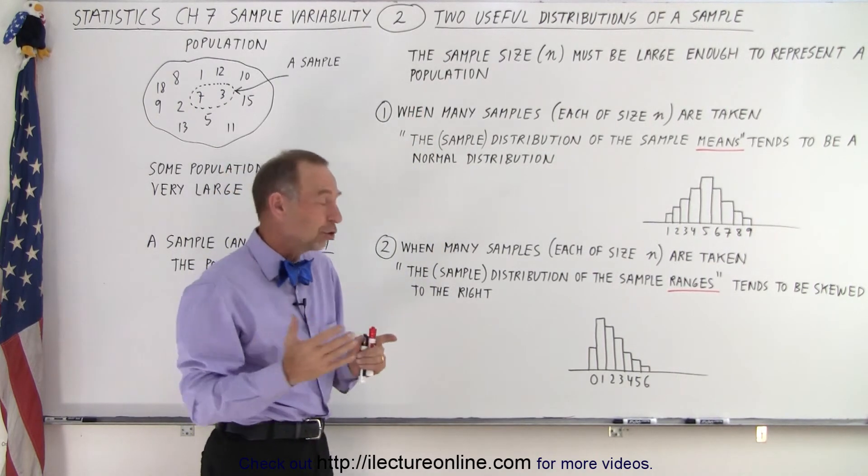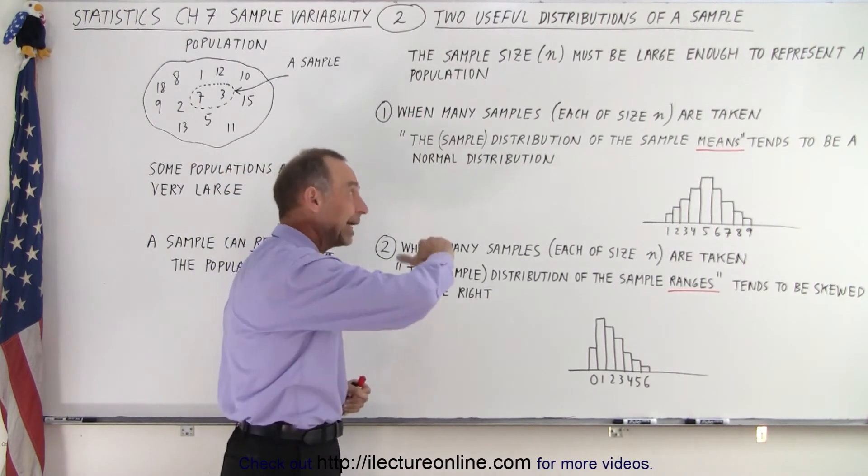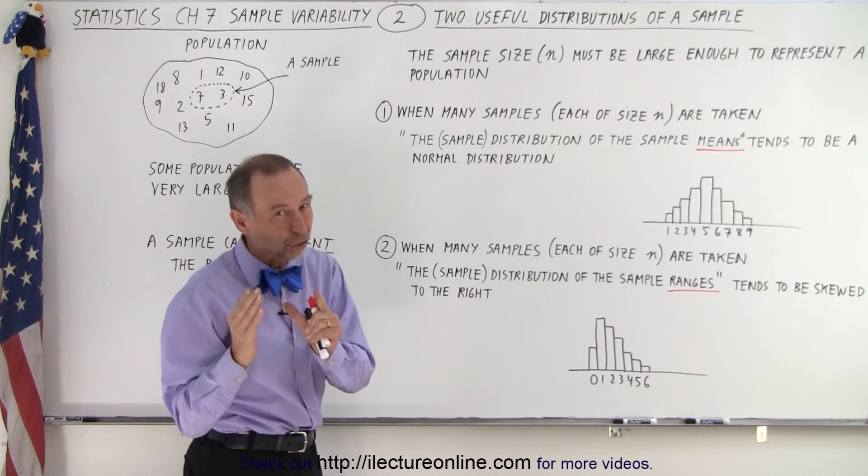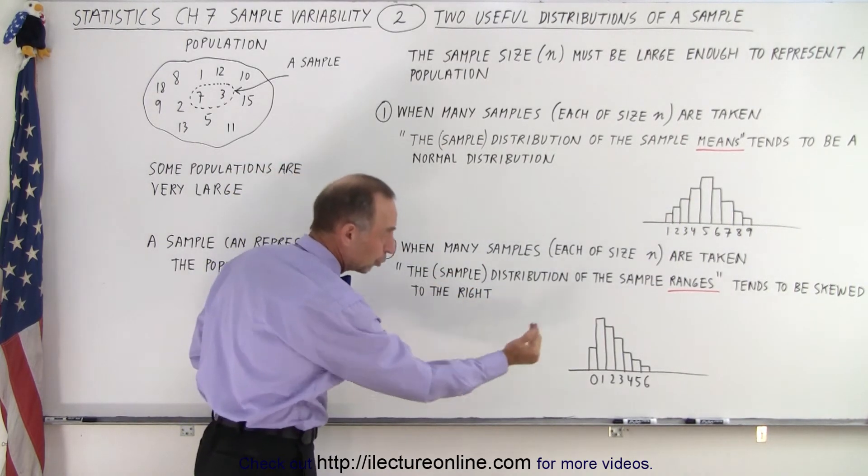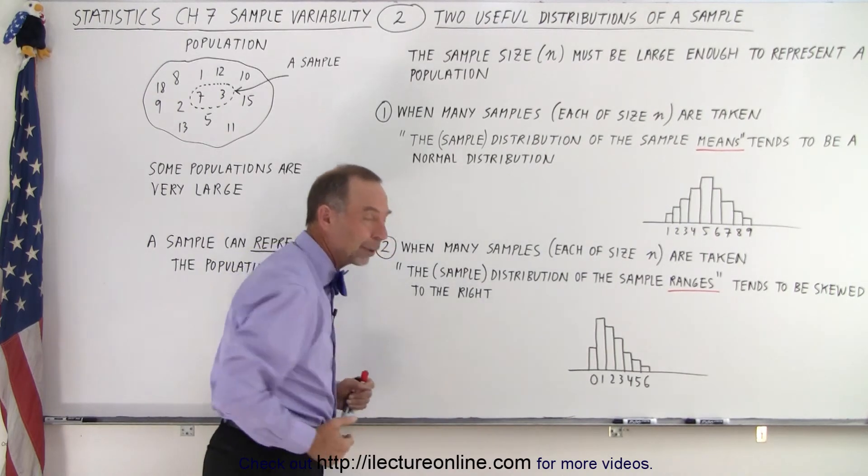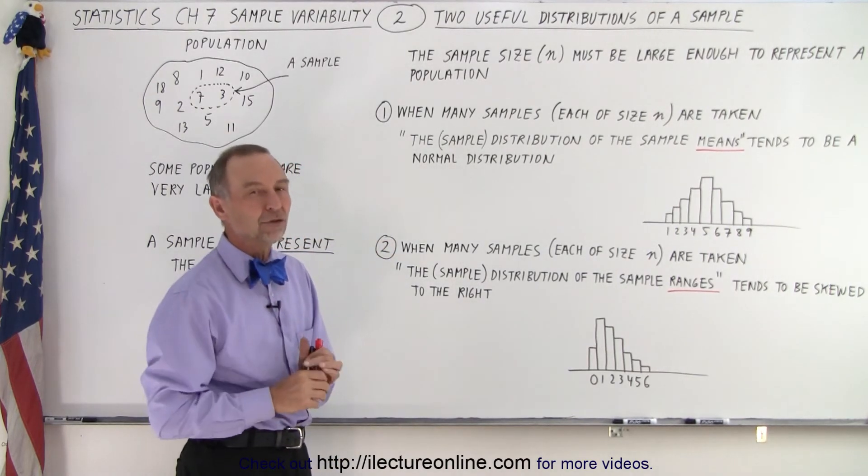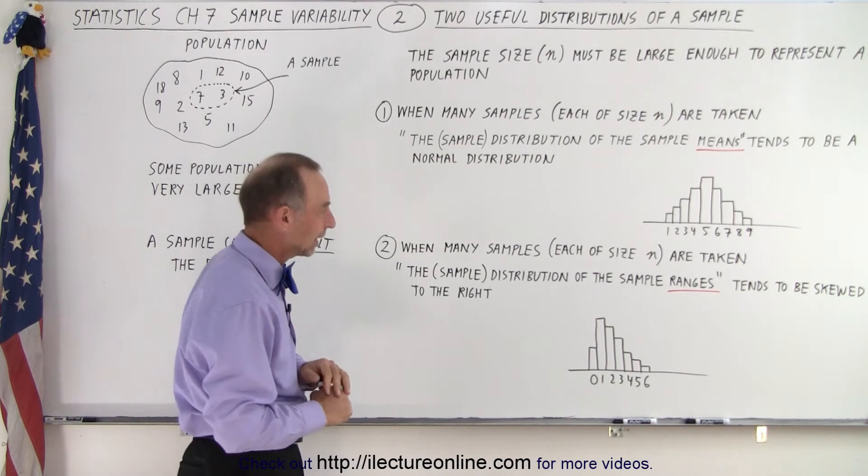If the sample size is large, that won't be so much the case. It will again become more of a normal distribution. If the sample size is small, then we tend to lean towards having a greater occurrence at the smaller ranges. And we'll show you some examples of that later as well.